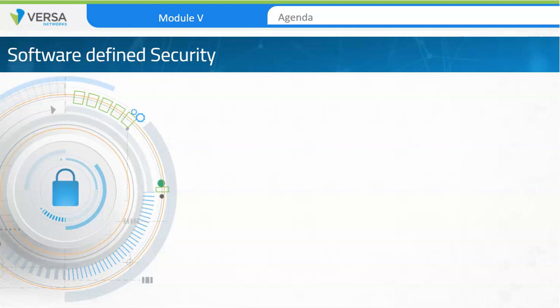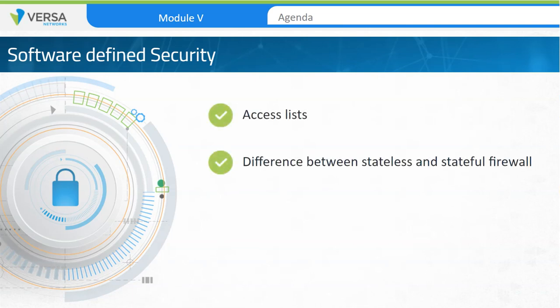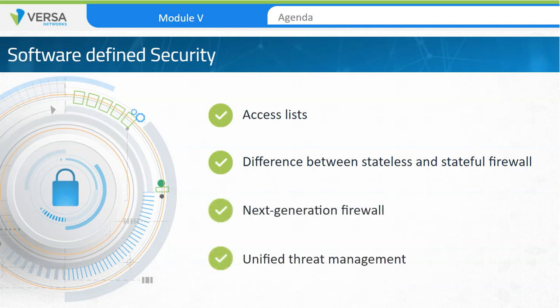Welcome to session 5 of Versa Essentials: Software-Defined Security. In this session, we'll discuss access lists, the difference between stateless and stateful firewalls, next-generation firewall capabilities, and unified threat management. We'll begin by discussing how access lists work.